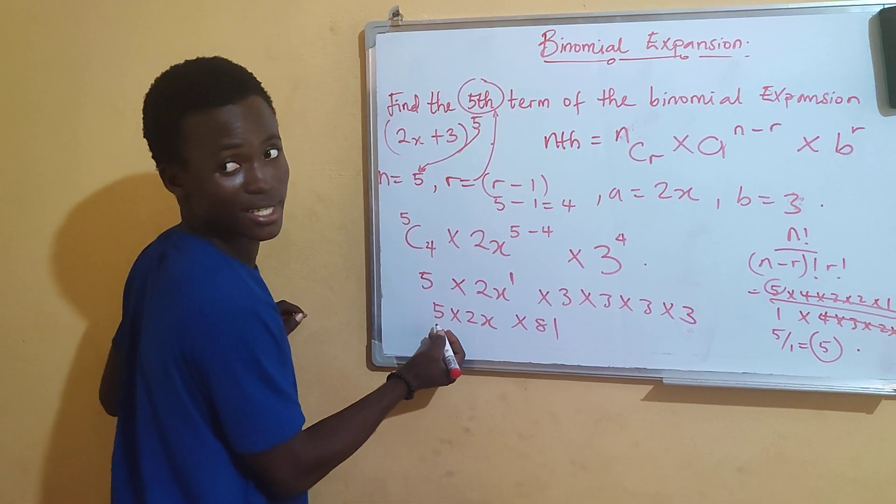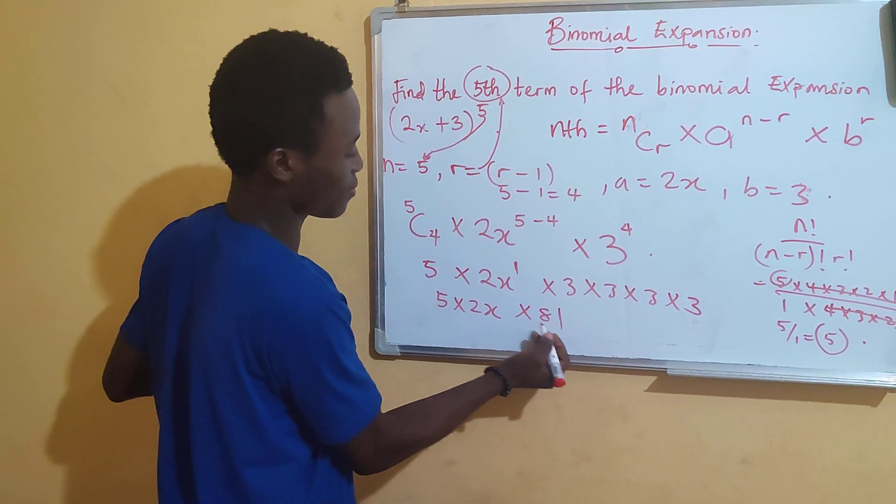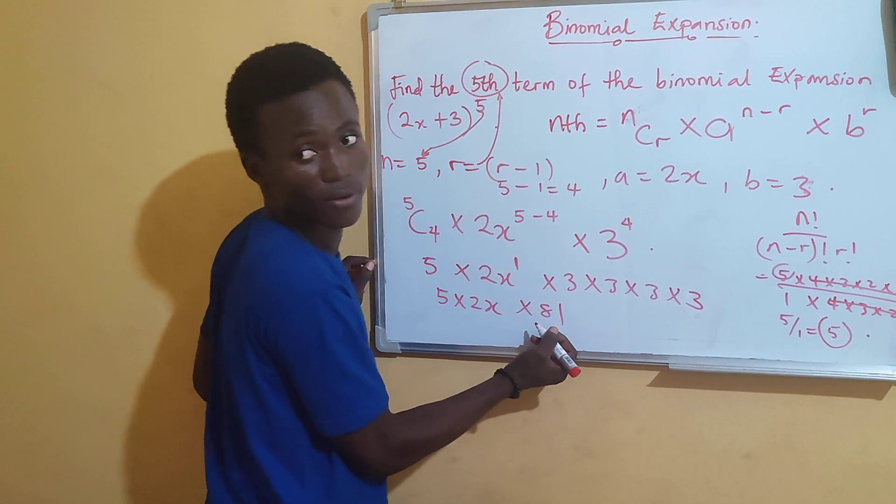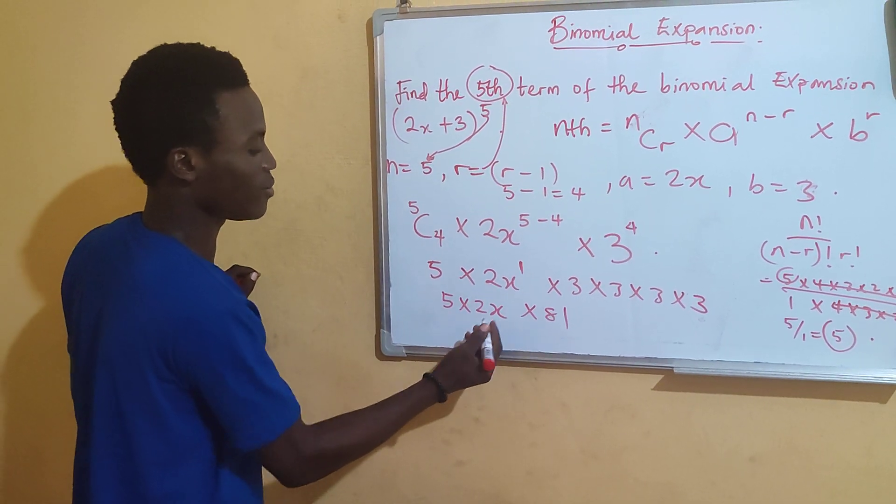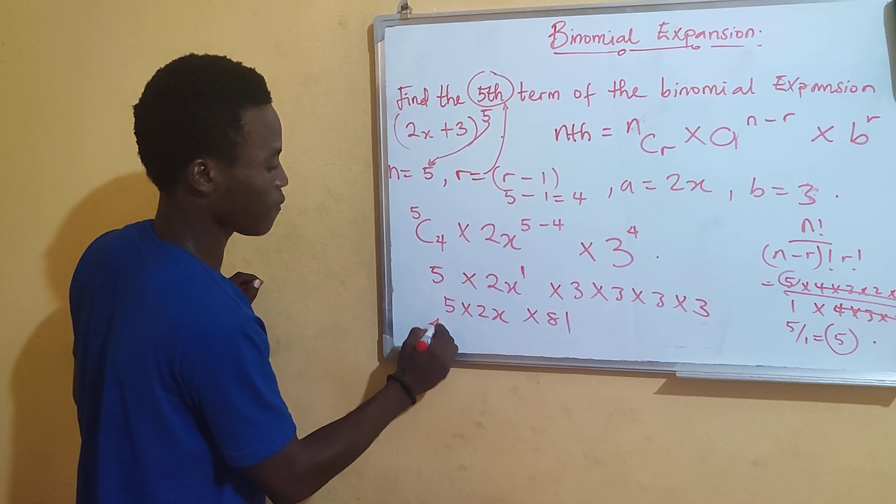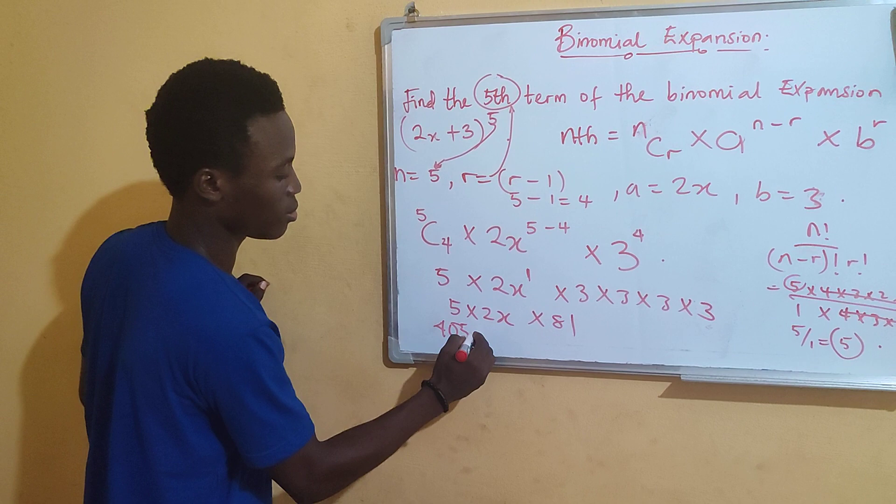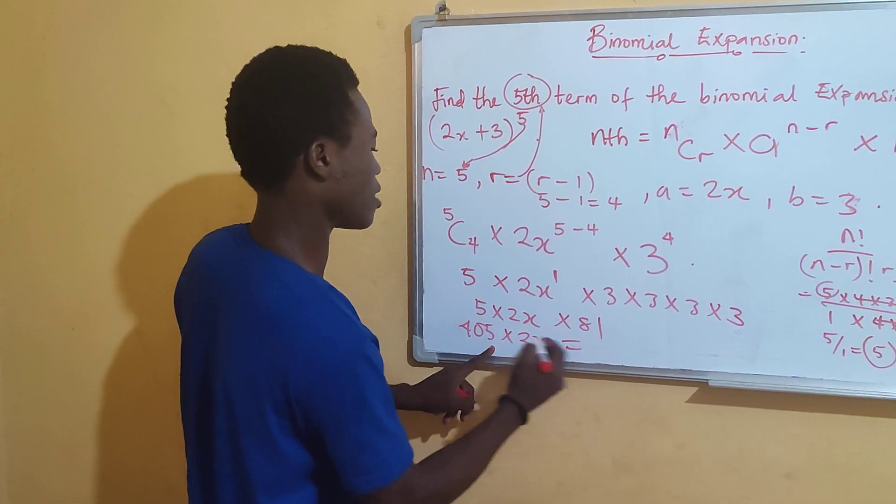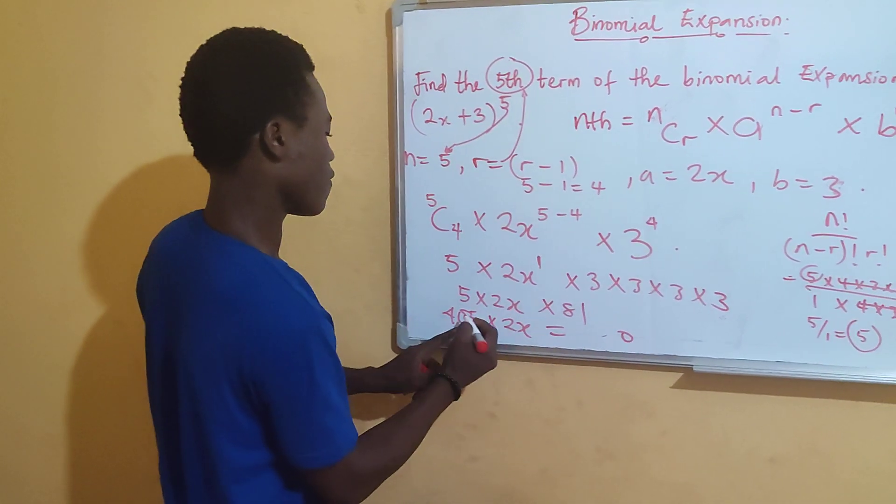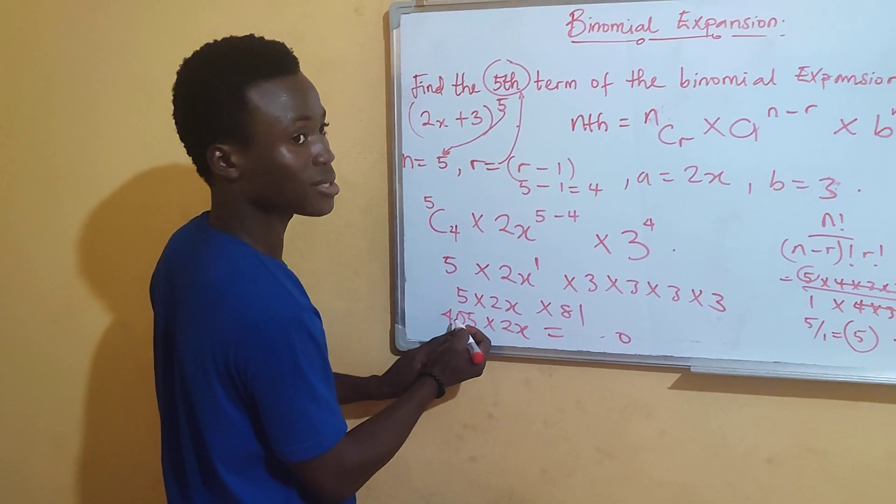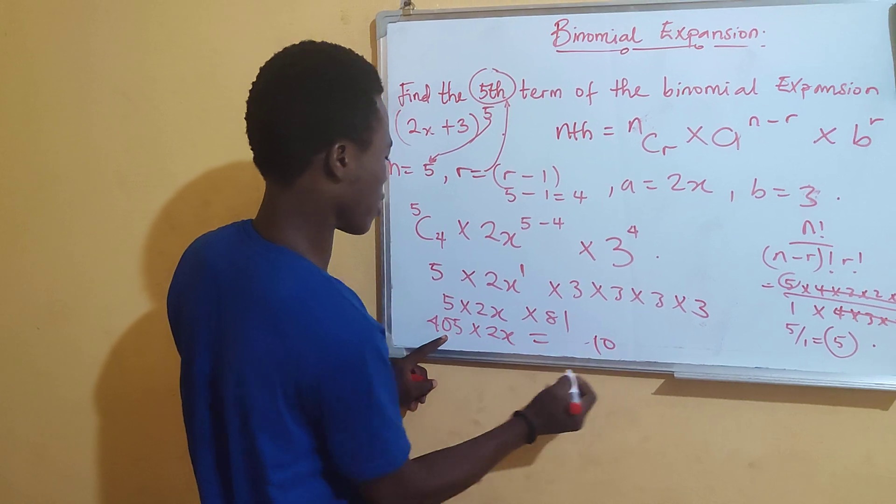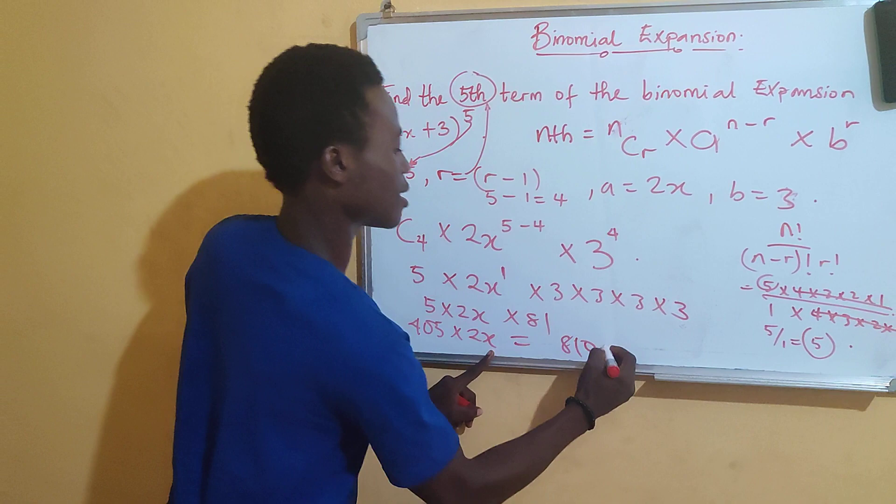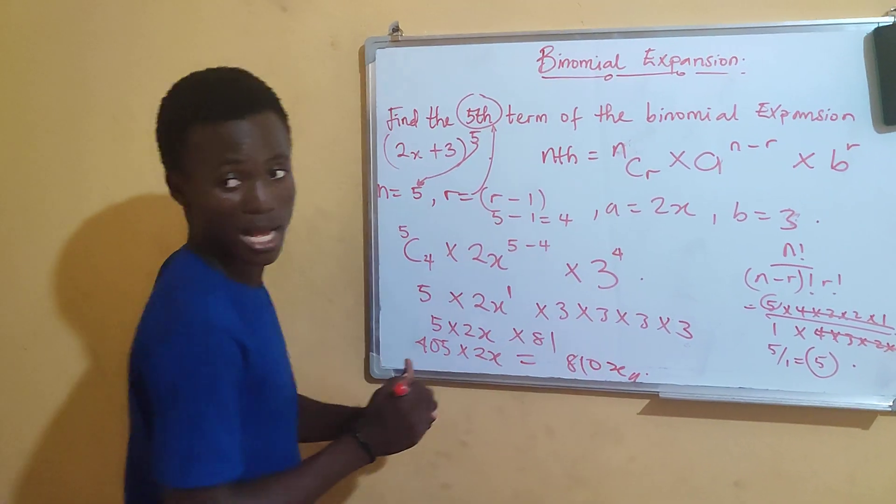I will have to multiply 5 and 81 together. So, 5 times 1 is 5. Then 5 times 8 is 40. So, that means I will be having 405 multiplied by 2x. Multiplying this with 2x again, 5 times 2, that is 10. So, now, I will have to write 0, keep 1. 2 times 0, that is 0 plus 1, I will have 1. Then 2 times 4, I will have 8. That is giving me 810x to be my final answer.